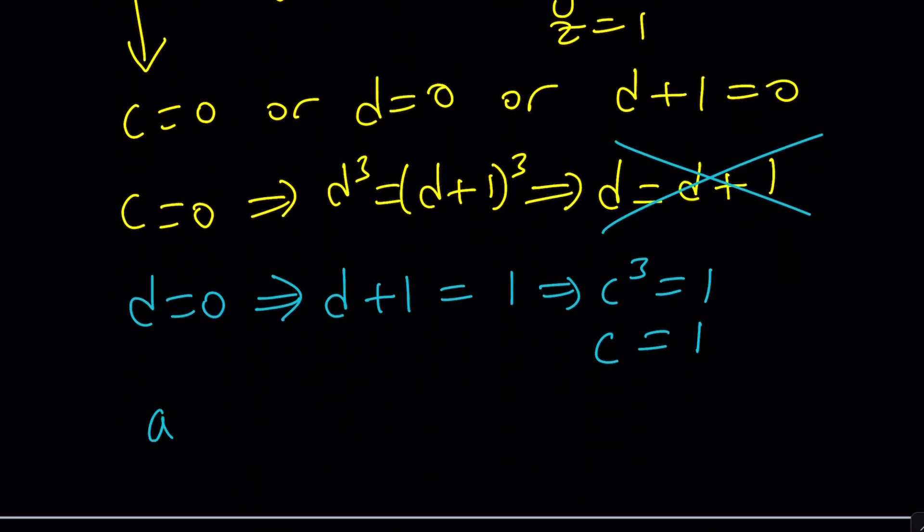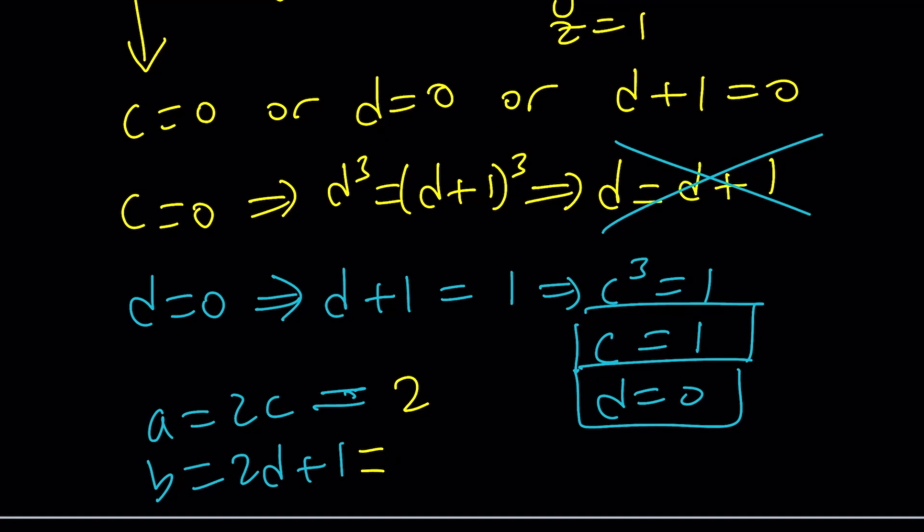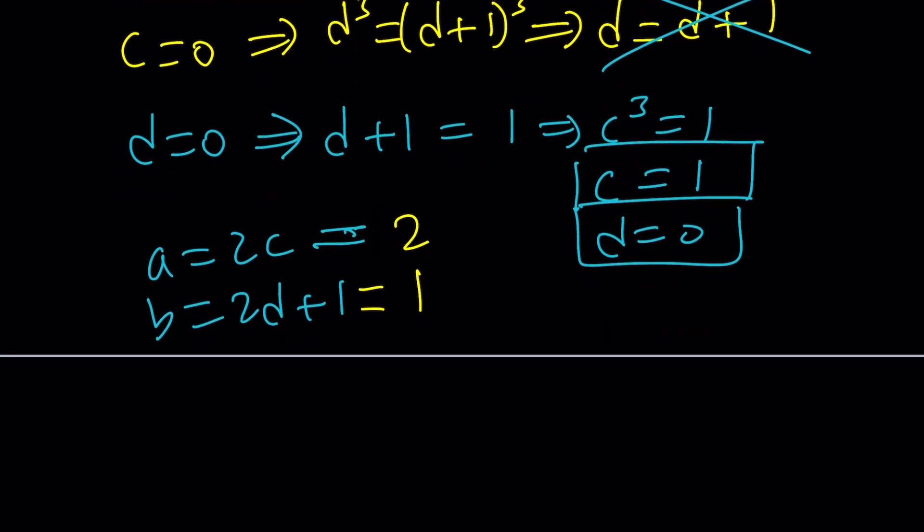Let me copy these down here. A is equal to 2C and B is equal to 2D + 1. Now we have that C is equal to 1 and D is equal to 0. So from here, A is just going to be 2C, which is 2, and B is going to be 2D + 1, which is 1. So obviously (2, 1) is an ordered pair that works.